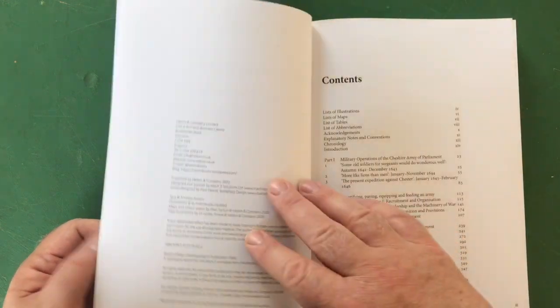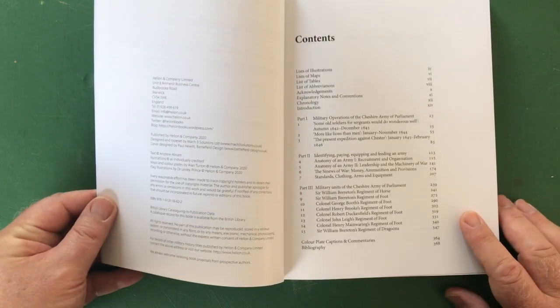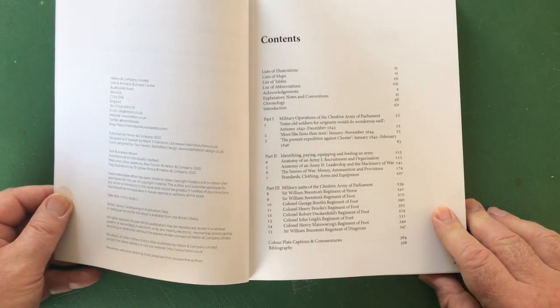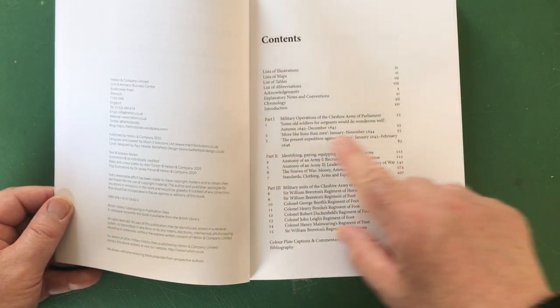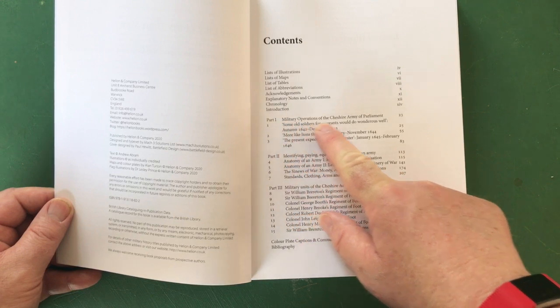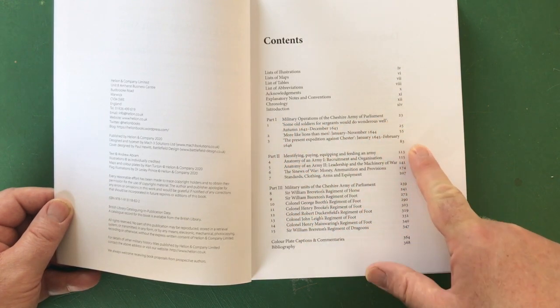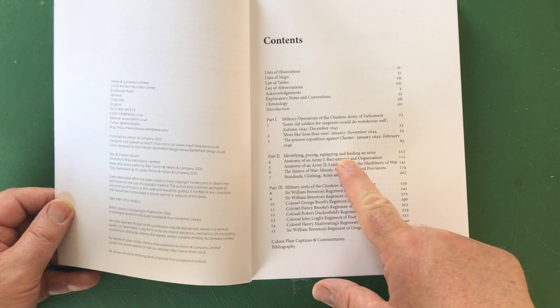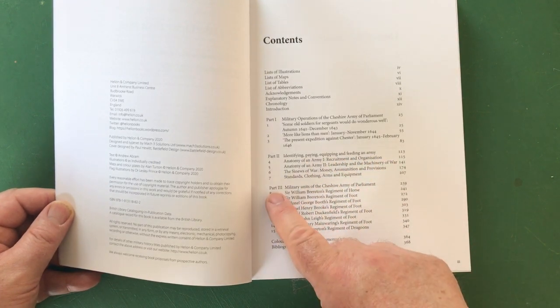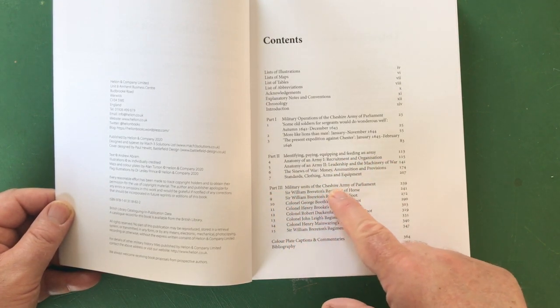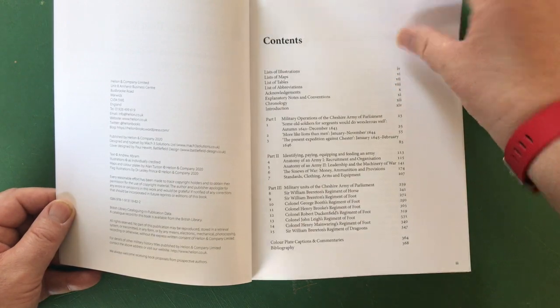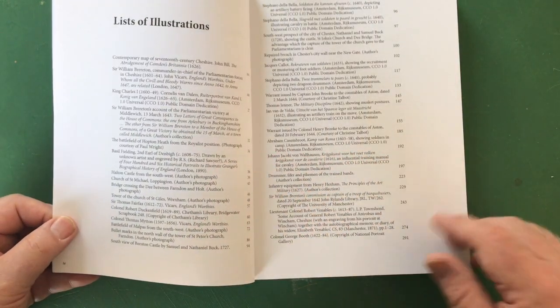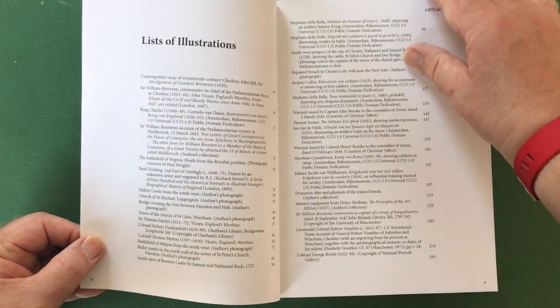If we look at the contents, you can see that Part One is Military Operations of the Cheshire Army of Parliament, Part Two is Identifying, Paying, Equipping and Feeding an Army, Part Three is Military Units of the Cheshire Army of Parliament, with a list of color plates and an extensive list of illustrations.